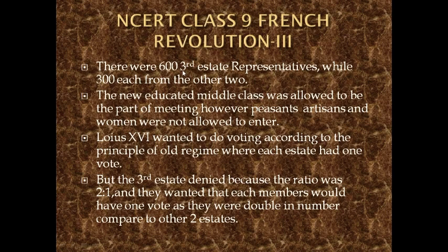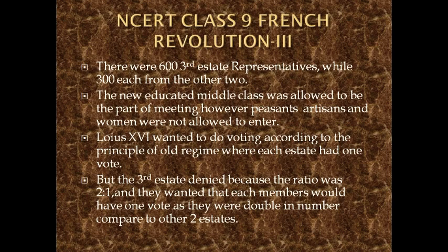There were 600 representatives from the third state and 300 each from the other two. According to the old regime voting style, one representative from each state would cast one vote — so the noble class cast one vote, the clergy cast one vote, and the commoner class cast one vote. But the third state denied this because the ratio was 2 to 1 against them.